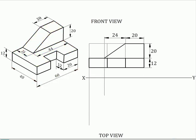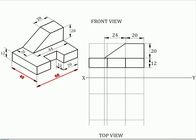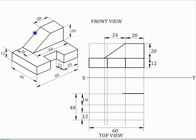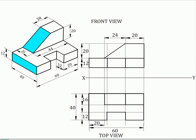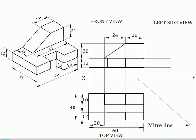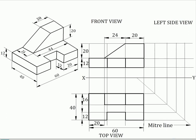Draw projectors vertically downwards and complete the top view. Now to draw the left side view, as it will come to the right of the front view, draw the miter line and draw the projectors horizontally from the front view and through the miter line from the top view. Now complete the left side view and show the dimensions appropriately.